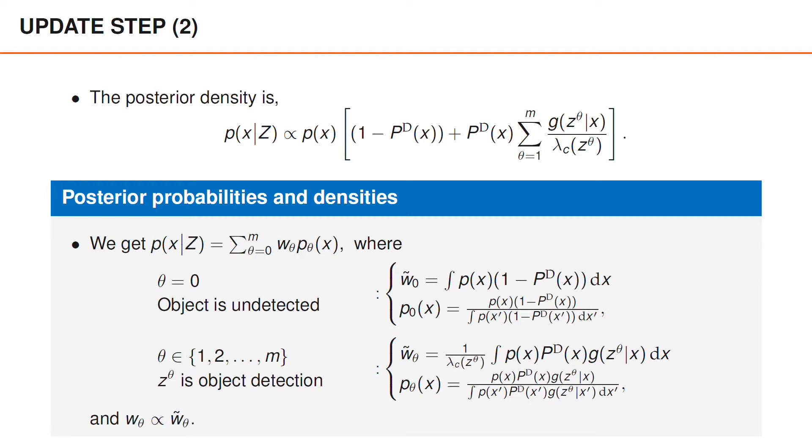Since we have claimed that p_θ(x) is the posterior density given the data association, these should be closely related. You could pause the video here and try to explain it to yourselves before I proceed.